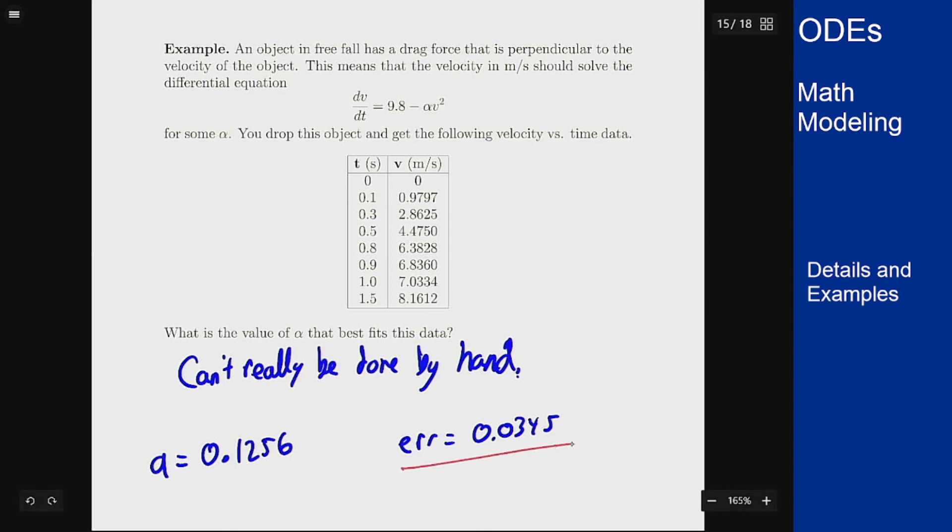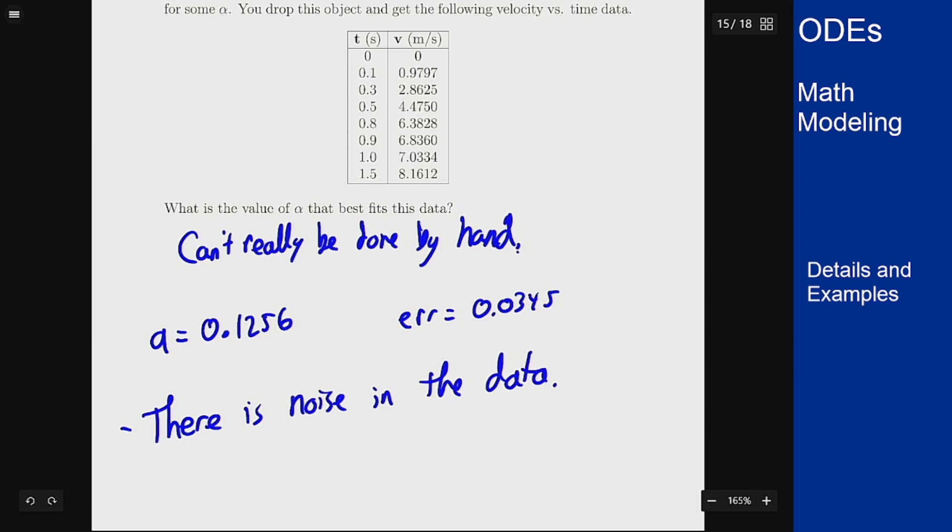There's still an error even with that value of a, and that's partially because there is noise in the data. The data is never going to be completely accurate - that's the nature of measuring data. Scales have tolerances, everything has tolerances. The noise means you can't just pick one of these values and assume it's right. This takes an average of the best values and gives you one single value you could use as the coefficient.